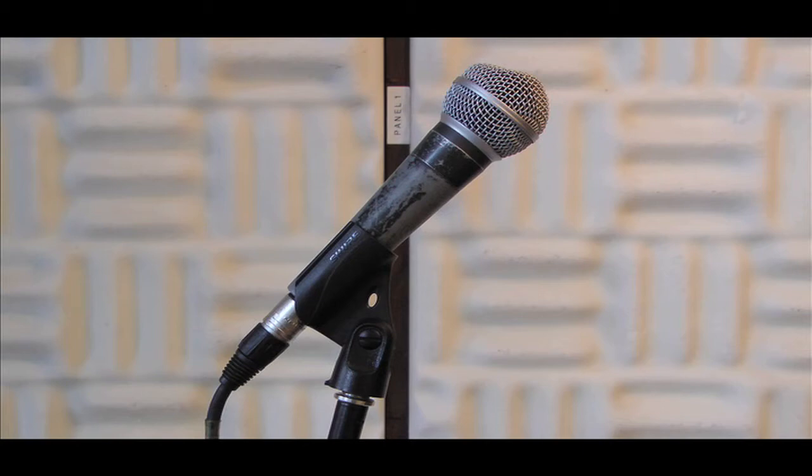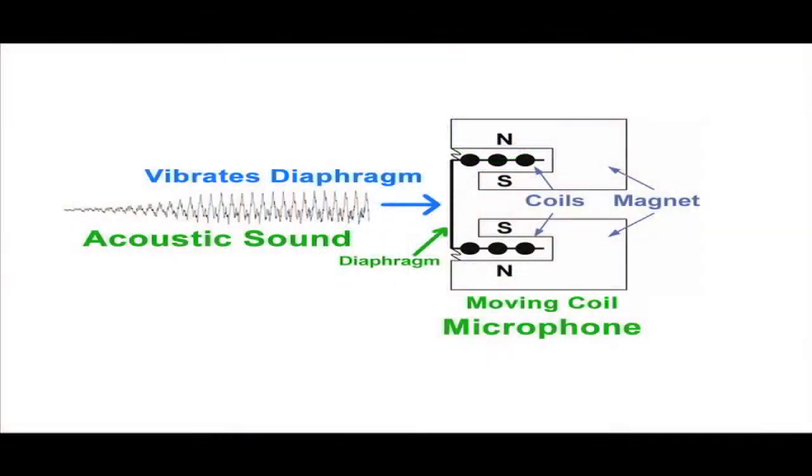But how do microphones and speakers actually translate these types of energy, or transduce? Let's dissect one basic type of microphone, moving coil, and find out. Beneath the capsule cover, we can see the diaphragm. Acoustic energy first hits this part of the microphone. This energy vibrates the diaphragm.